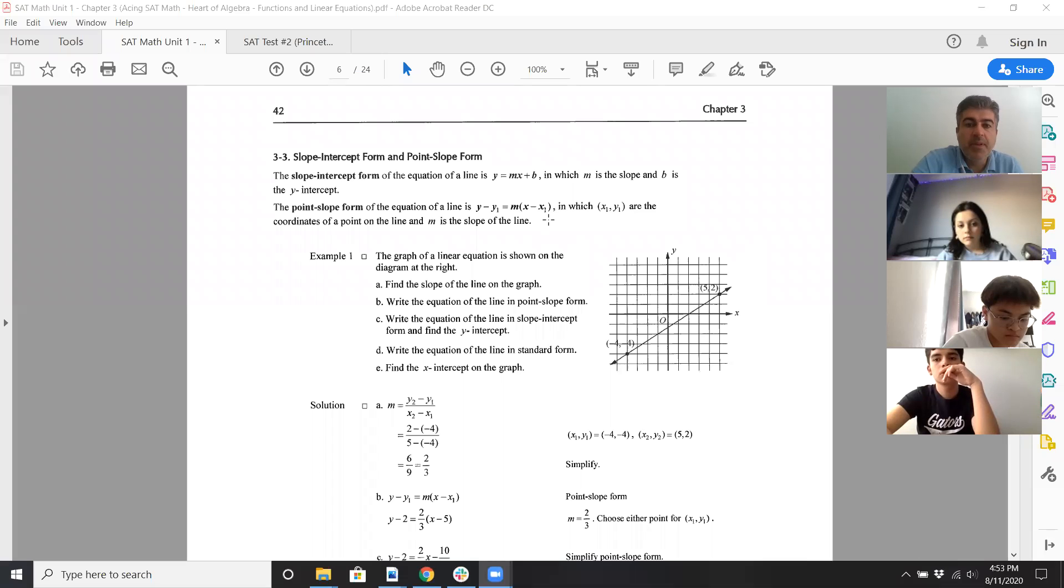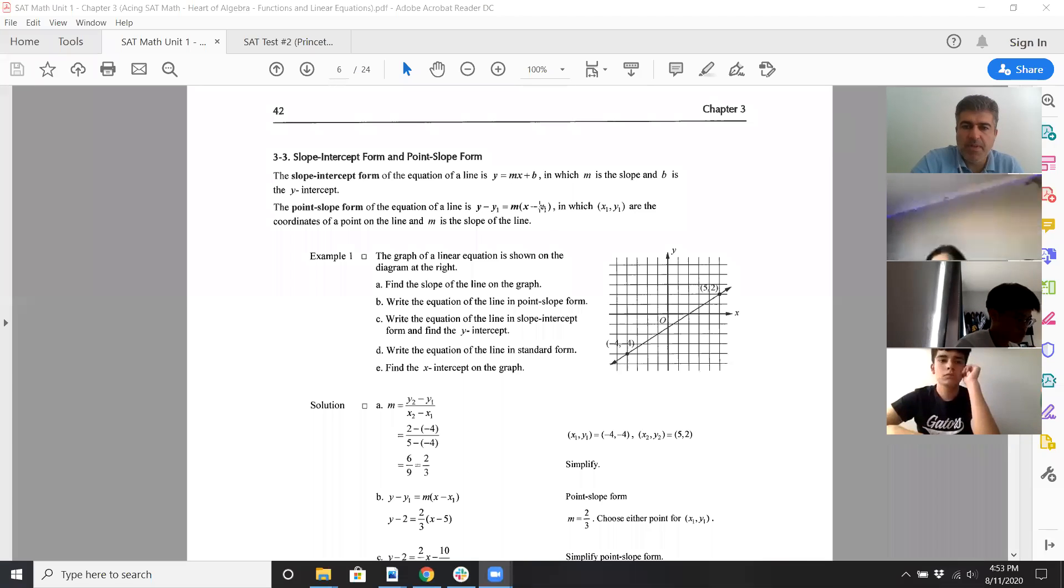All right, we're recording. So slope-intercept form and point-slope form, remember I already talked about that. Slope-intercept form is y equals mx plus b, we should know this. Point-slope form: y minus y1 equals m times x minus x1.